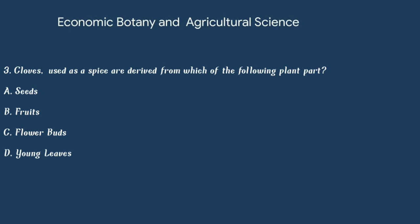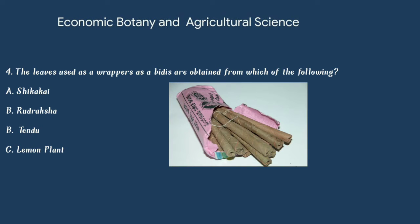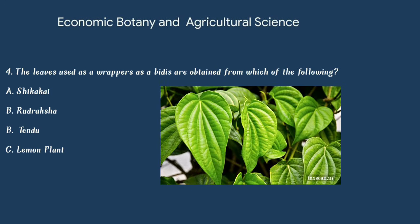Question number 4. The leaves used as wrappers for berries are obtained from which of the following? Option A: Shikakai. Option B: Rudraksha. Option C: Tendu. Or option D: Lemongrass. The answer is option C: Tendu.